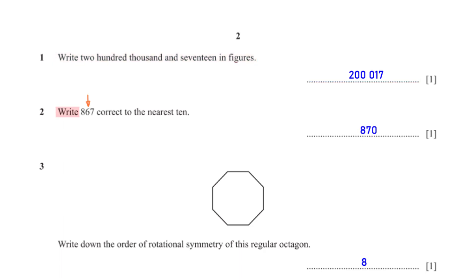Write eight hundred and sixty-seven correct to the nearest ten. The number in the ten's position is six. The number after six, which is seven, is greater than five, so we add one to six giving seven, and the units digit becomes zero. So we have eight hundred and seventy, rounded to the nearest ten.